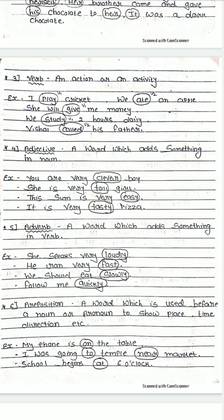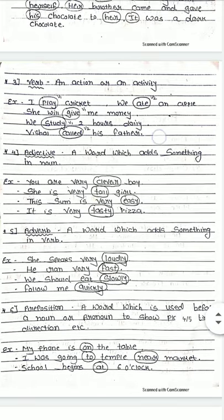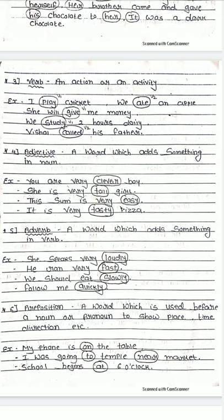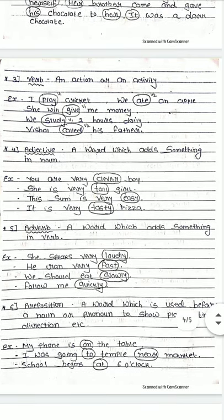Fifth is adverb. As adjective adds something to a noun, adverb adds something to a verb. Definition: a word which adds something to a verb — verb mein kuch add karta hai use hum adverb bolte hain. 'She speaks very loudly' — speaks is the verb, loudly is the adverb. 'He ran very fast' — fast is the adverb. 'We should eat slowly.' 'Follow me quickly.' So loudly, fast, slowly, and quickly are all adverbs.